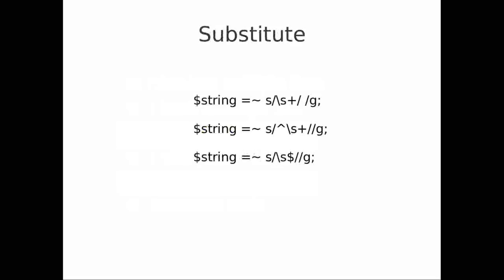Adding the global modifier 'g' to our string substitutions makes sense for the first case — we replace every occurrence of one or more white space characters with a single space character, one at a time. However, for the second and third examples — matching at the beginning or end of a line — adding the global modifier doesn't make sense, since there's only one beginning and one end.